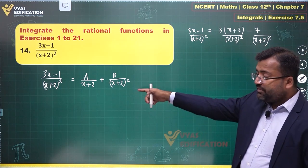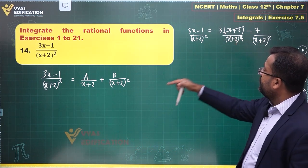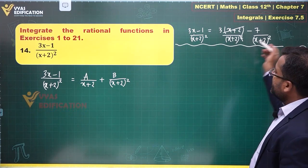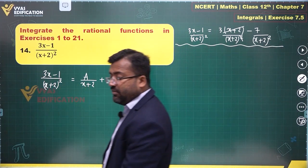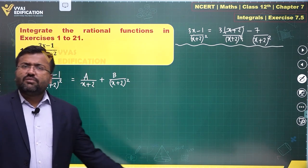If you write this in the numerator and you have x plus 2 square in the denominator, do you observe that this is the form that you are looking for in partial fractions? This x plus 2 gets cancelled with this, so you get 3 upon x plus 2 and minus 7 upon x plus 2 whole square. If there's only x plus 2 whole square in the denominator and a linear term in the numerator, then you can follow this kind of approach which will be very simple.